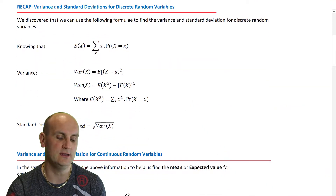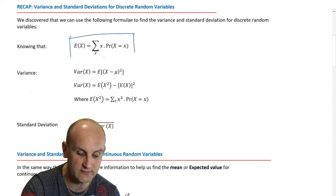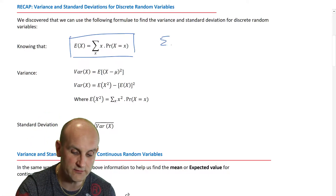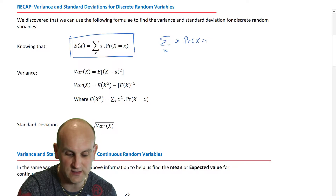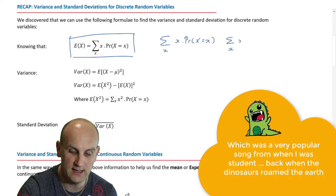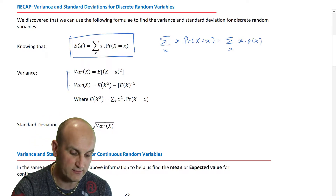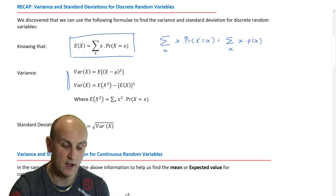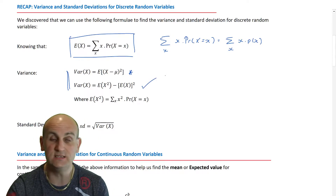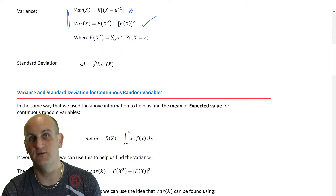The theory for variance and standard deviation for discrete random variables is very much the same. To find the expectation of a discrete random variable we use the sum over X of X times P(X). Working out the variance could be done in two ways — the one we used is: the variance of X equals the expectation of X squared minus the expectation of X, all squared.